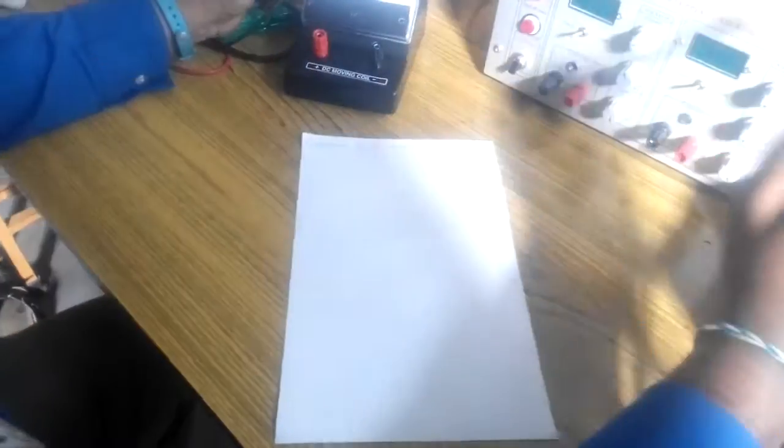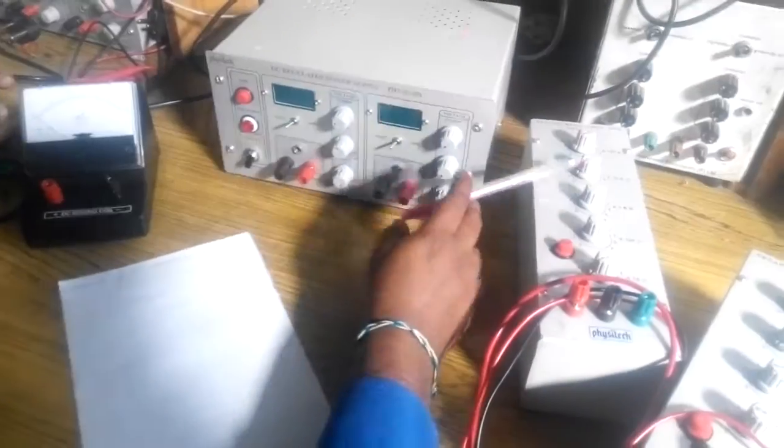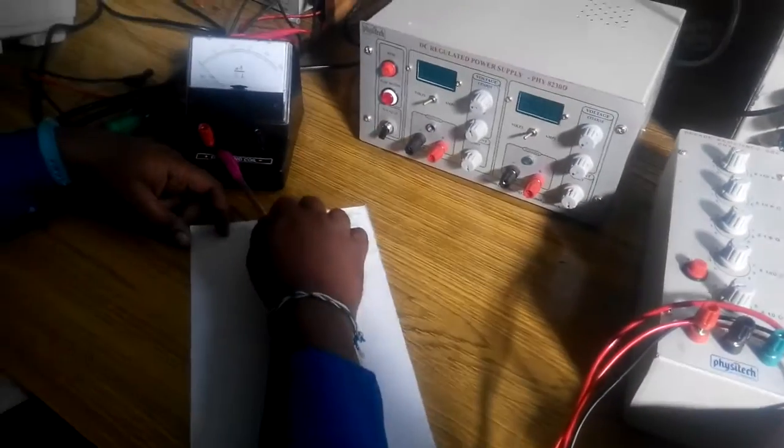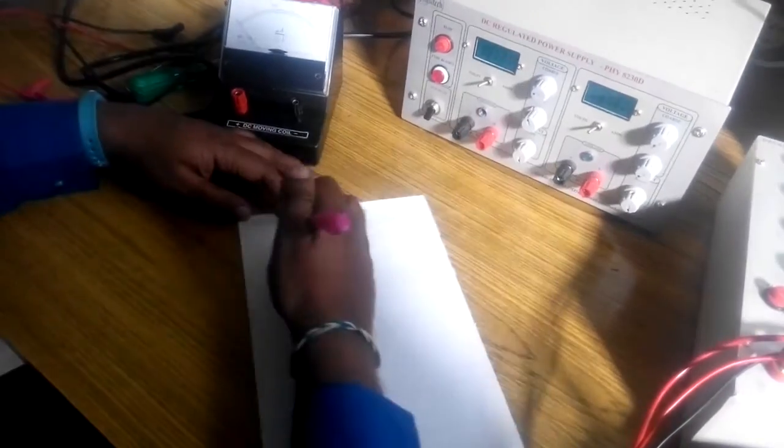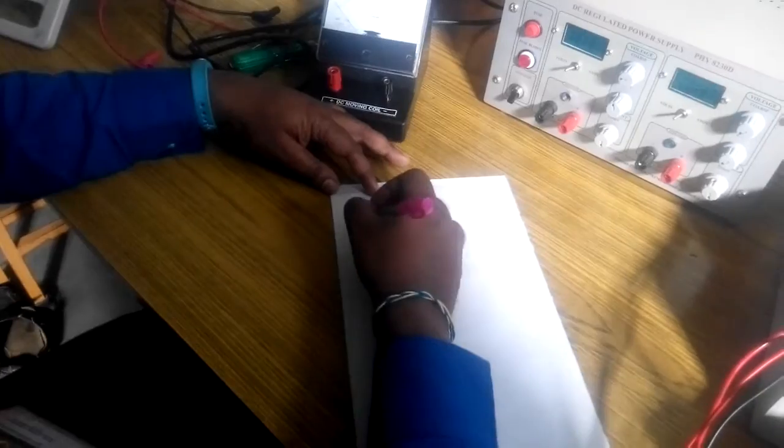A galvanometer can be converted into a voltmeter by connecting a resistance in series. The circuit for converting the galvanometer is demonstrated with the equipment.